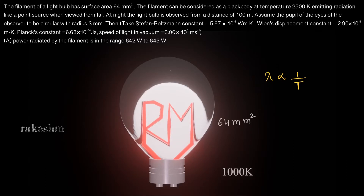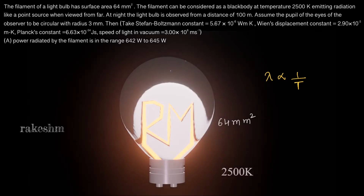We have heated the filament to 1000 Kelvin — observe the color, the color of the filament is red. Let us now increase the temperature of the filament to the value asked in the question, which is 2500 Kelvin. At 2500 Kelvin, this is how a black body will look — it has a very bright yellow color.